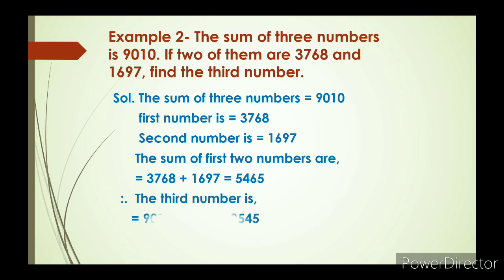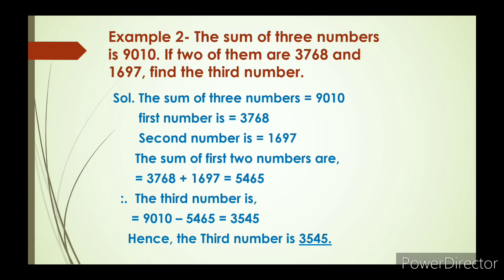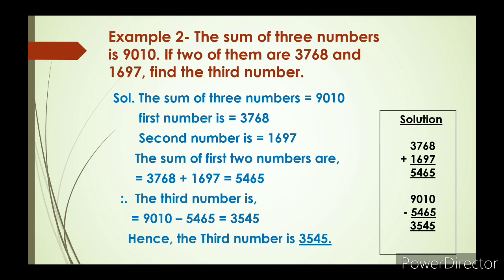Therefore, the third number is found by subtracting 5465 from 9010: 9010 minus 5465 equals 3545. Hence the third number is 3545. First we added 3768 and 1697 to get 5465, then subtracted to get the answer.